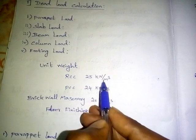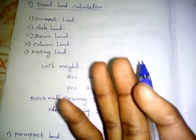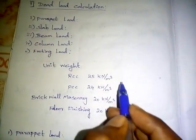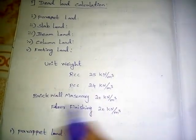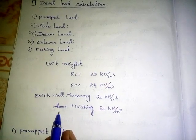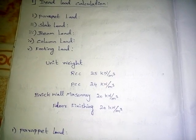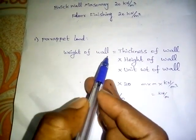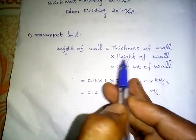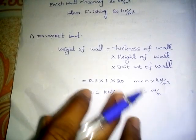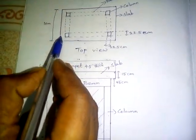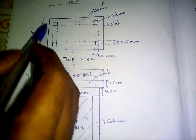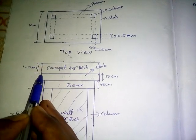That is the unit weight. There is a unit weight at the height. The formula for wall load is: width of wall × thickness of wall × height of wall × unit weight of wall. For brick masonry, height of wall and thickness of wall are used.